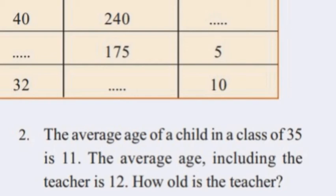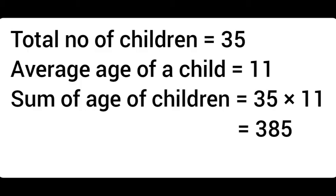The number of children is 35. The average age of children is 11. So the sum of ages of children is 35 into 11, which gives us 385.